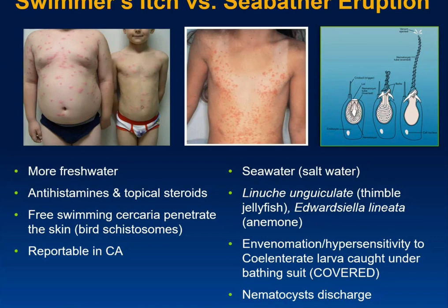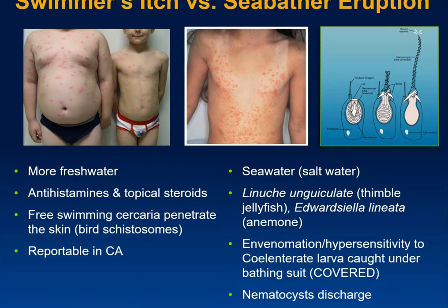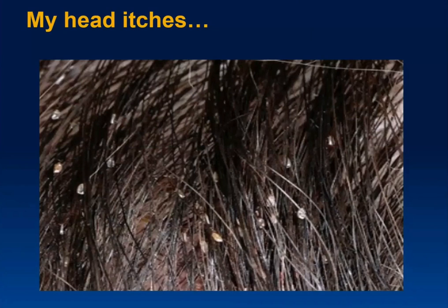It is a reportable disease in California. Sea bather's eruption is similar to other problems encountered in the ocean — it's caused by the thimble jellyfish Linuche unguiculata and the anemone Edwardsiella lineata. These are very small organisms that get into water and underneath bathing suits, where they trigger their nematocysts and sting you. There's not much to do except keep the patient comfortable; it resolves on its own.